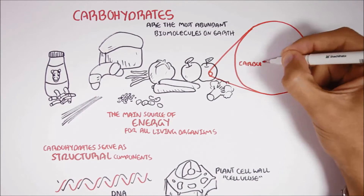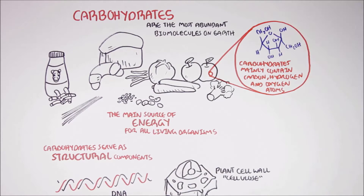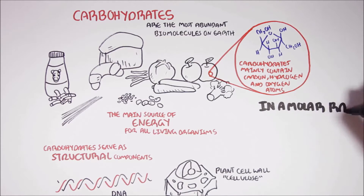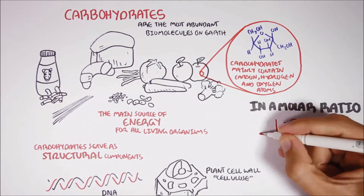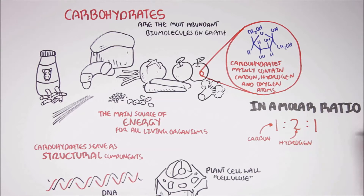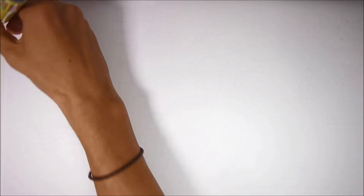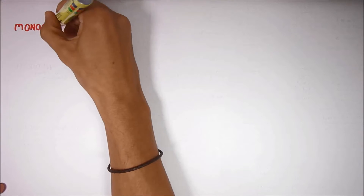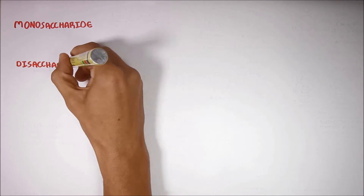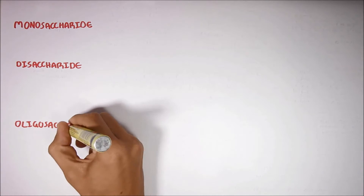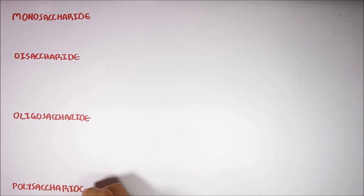Carbohydrates mainly contain carbon, hydrogen and oxygen atoms, in a molar ratio of one to one — one carbon, two hydrogens and one oxygen. Carbohydrates can be divided into four types: monosaccharides, disaccharides, oligosaccharides and polysaccharides.